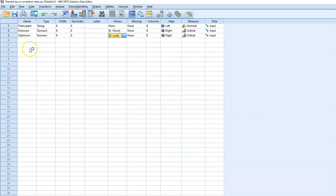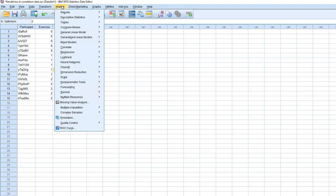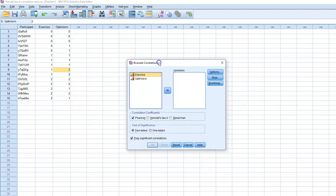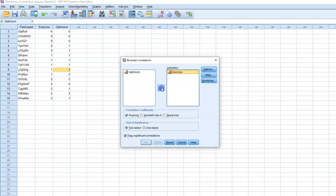Now we want to know if there's a relationship between how frequent participants exercise and how optimistic they are. So we can go to Analyze, Correlate, Bivariate. Our two variables are exercise and optimism, and we want to know the relationship between these variables using Kendall's Tau-B. So we uncheck the other measures, and let's see how the relationship turns out.